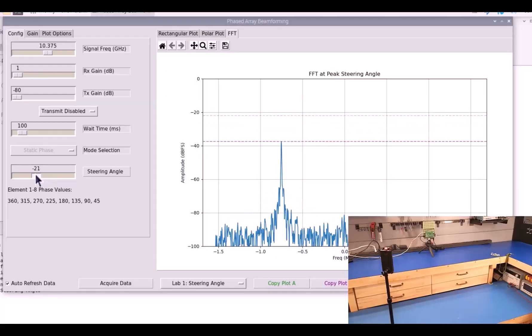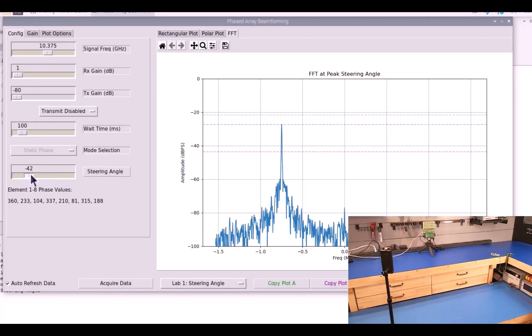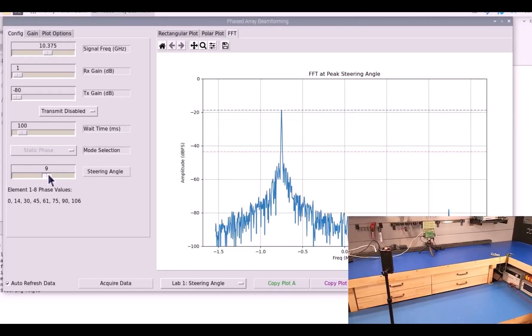But if you remember, we also saw a variety of lesser peaks and nulls, and these were not predicted by our equation. So the questions are, are these real? Where do they come from? And are they a problem?